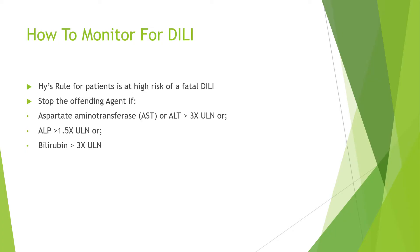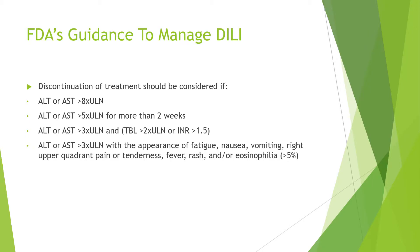Here's how you monitor DILI. Hy's Rule is a protocol to help healthcare practitioners monitor DILI in patients at the highest risk of fatal DILI. It states that the offending agent should be stopped if the AST or ALT level is three times greater than the upper limit of normal, or the ALP is greater than 1.5 times the upper limit of normal, or the bilirubin is greater than three-fold the upper limit of normal. The FDA has also offered guidance stating that discontinuation of treatment should be considered if any of the liver enzyme criteria are met, and if liver enzymes are greater than three times the upper limit of normal with appearance of symptoms such as fatigue, nausea, vomiting, right upper quadrant pain or tenderness, fever, rash, and eosinophilia.